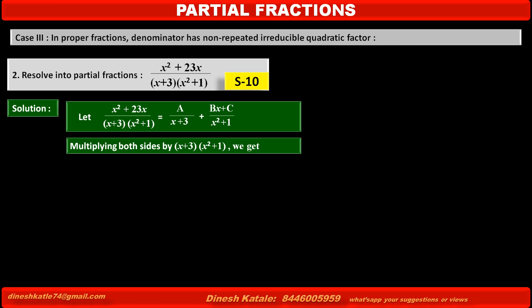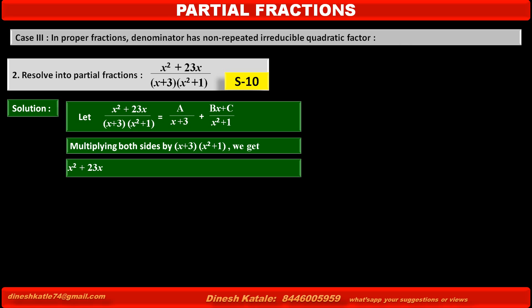After multiplying the left-hand side by the LCM, the denominator cancels and the left-hand side becomes x² + 23x. On the right-hand side, multiplying by the LCM cancels the denominator of the first term, giving A(x²+1), and cancels the denominator of the second term, giving (Bx+C)(x+3). Consider this statement as equation 1.